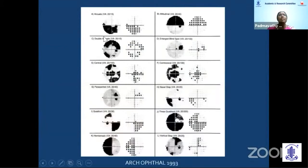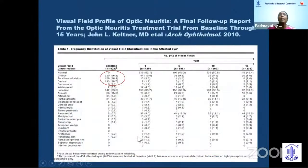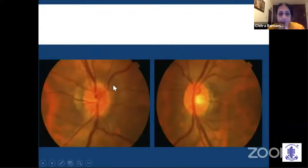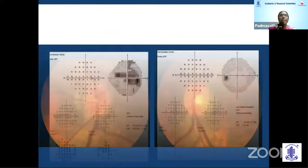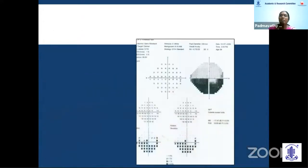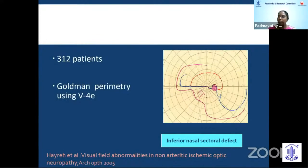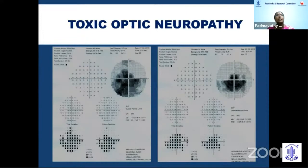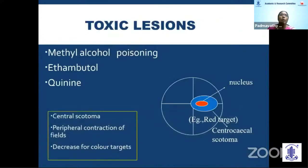The Optic Neuritis Treatment Trial found that diffuse vision loss was the commonest finding, with central and cecocentral scotoma also frequent. A case of Leber's hereditary optic neuropathy showed a central cecocentral scotoma. In ischemic optic neuropathy, a pallid disc edema with no hyperemia on the other side corresponds to an altitudinal field defect. Research on non-arteritic AION found that inferior nasal sectoral defect was the commonest defect compared to altitudinal defects. Toxic optic neuropathy — from drugs like ethambutol and vigabatrin — most commonly causes a central cecocentral scotoma with peripheral contraction and reduced color vision.